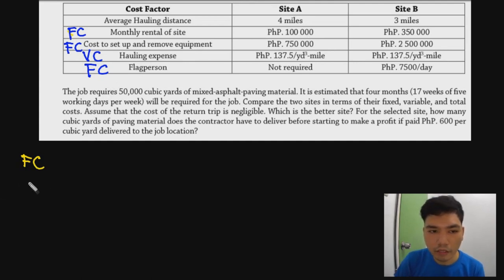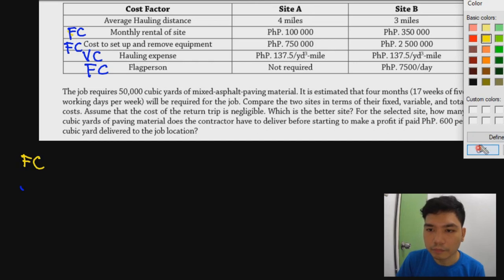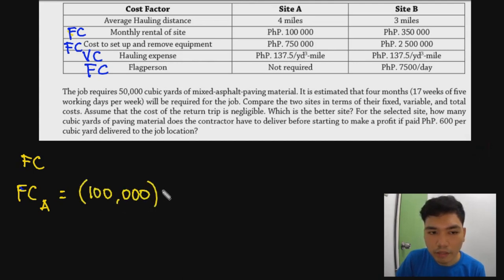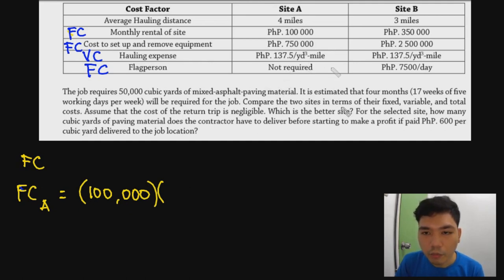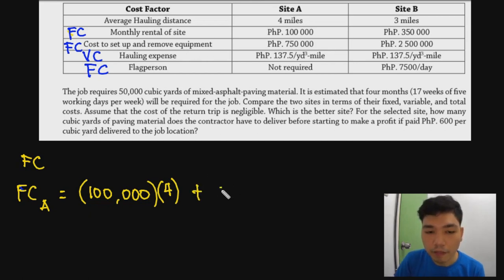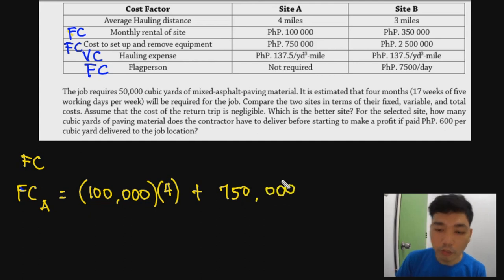Fixed cost for Site A: 100,000 monthly rental times 4 months, plus 750,000 for equipment setup and removal. There is no flag person for Site A. The calculation gives 1,150,000 pesos as the total fixed cost for Site A.